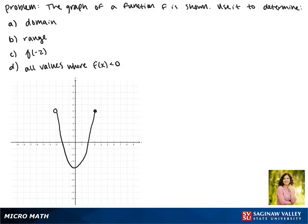The graph of a function f is shown. Today we'll use it to find the domain, range, f of negative 2, and all values where f of x is less than 0.